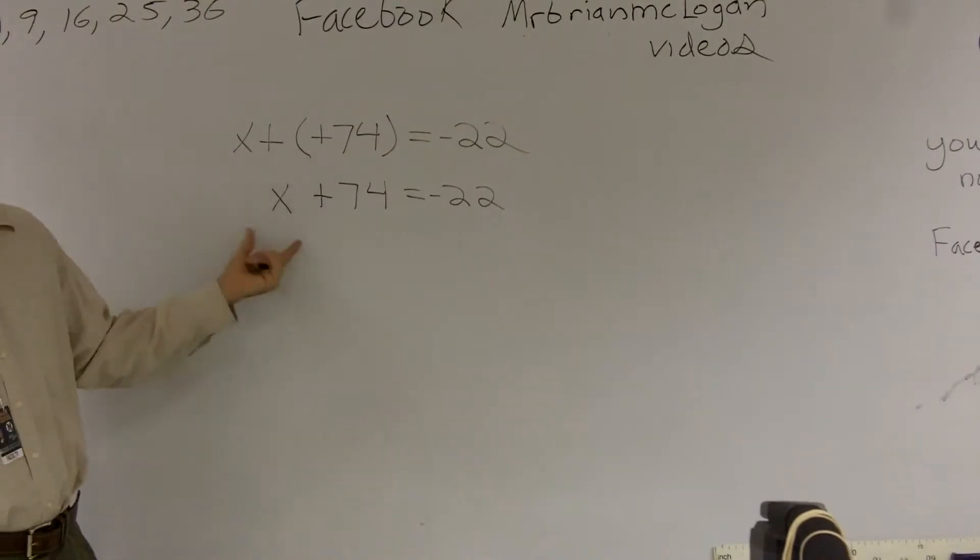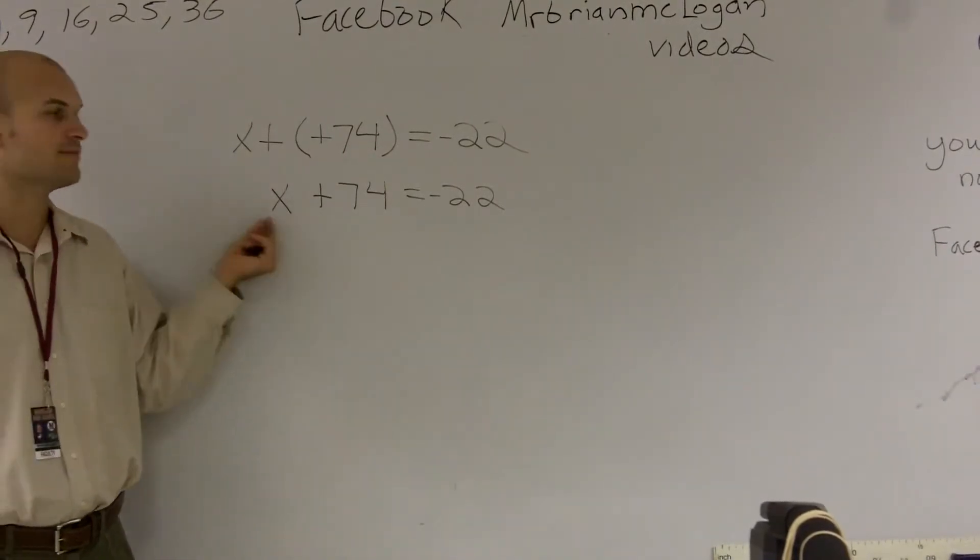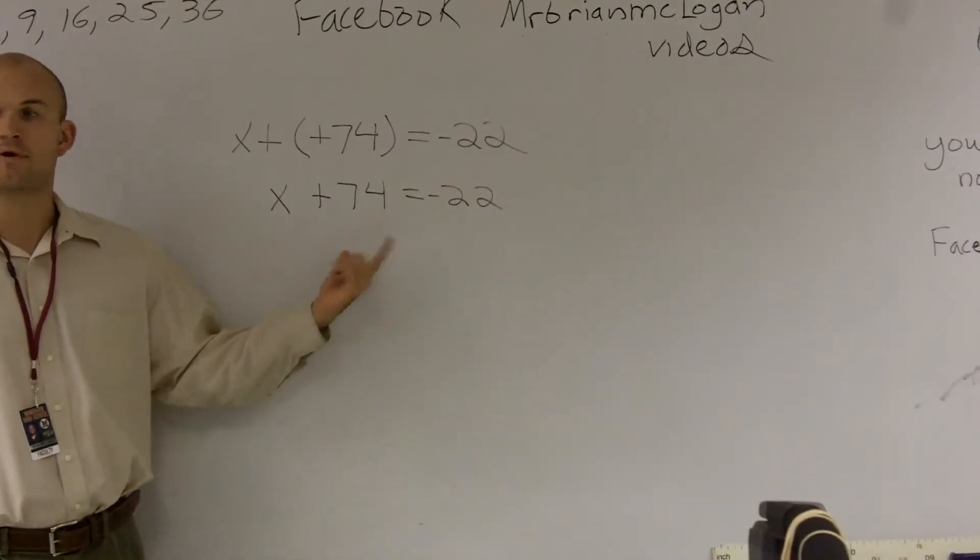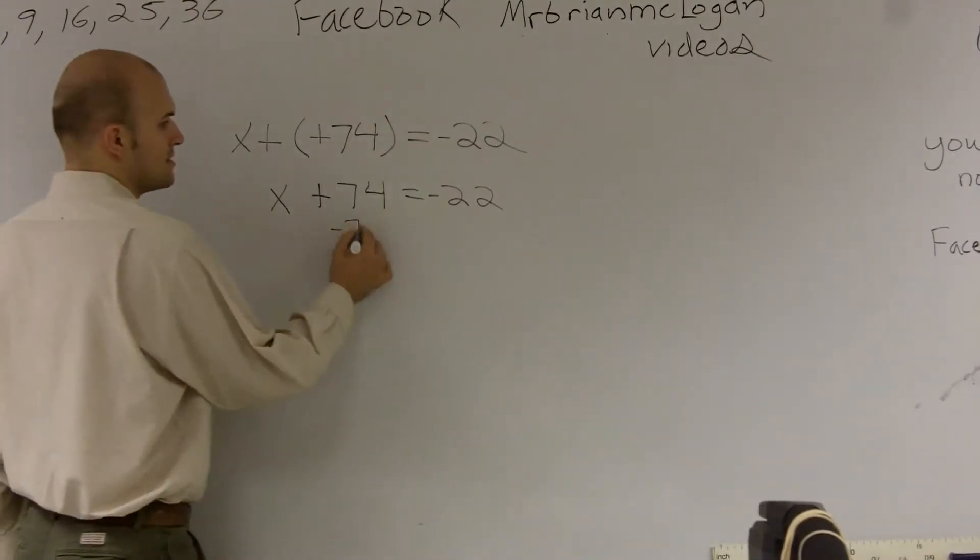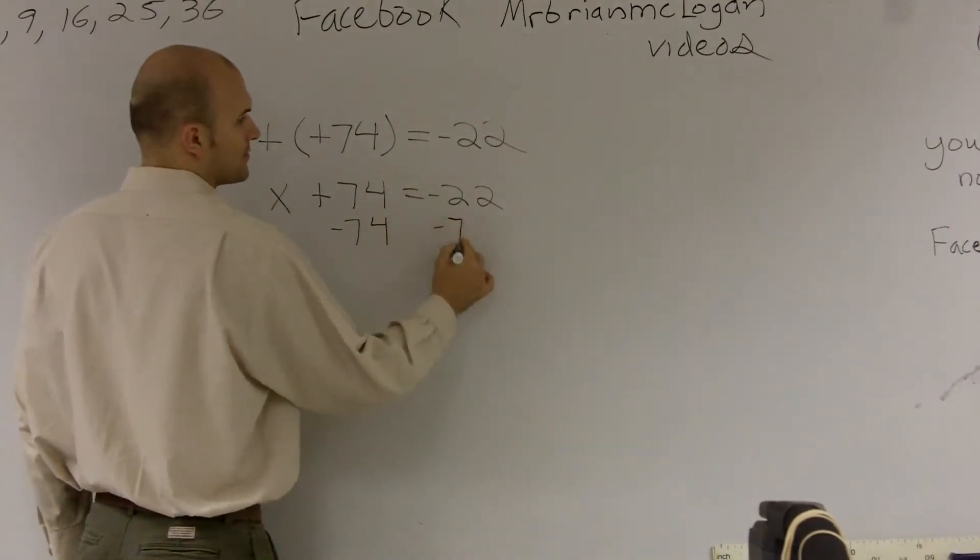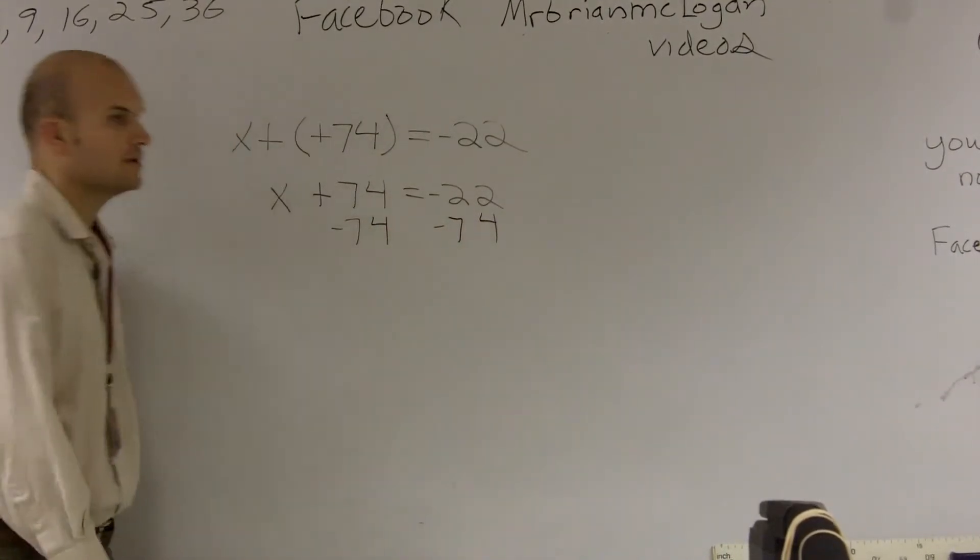I see my variable, because remember, my x is what I'm solving for. So I'm going to undo what's happening to it. If it's being added by 74, I'm now going to subtract 74. And whenever you do it on one side, you have to do it on the other.